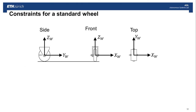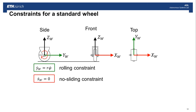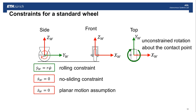Let's review the differential constraints for a standard wheel. Motion in the y direction is explained by the rolling of the wheel: if the wheel's radius is r and the turning speed is phi dot, then y dot equals r phi dot. We have the no-sliding constraint, so the wheel cannot sideslip. We make the planar assumption, so velocity in the z direction is also zero. Finally, it has unconstrained rotation about the contact point.